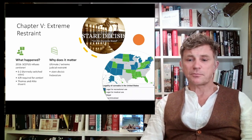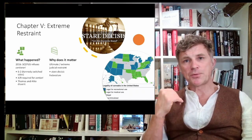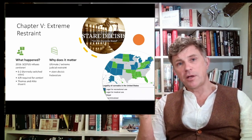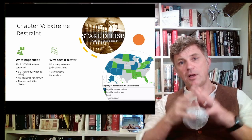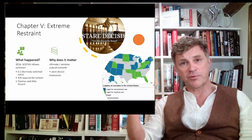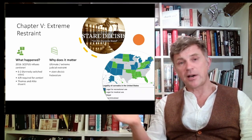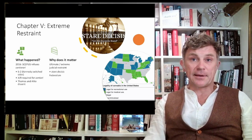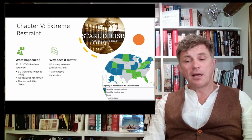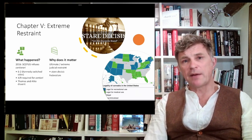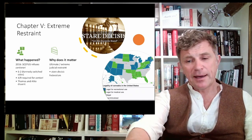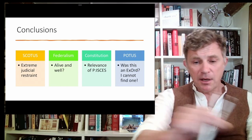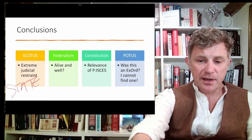That's how federalism is supposed to work — we're not going to impose one-size-fits-all because it's not in the Constitution. There is no justification in the Constitution for one-size-fits-all when it comes to drugs. And if you take your privacy and Griswold versus Connecticut in 1965, then arguably there's a case for individuals being allowed to do whatever they like. So in this chapter we have extreme restraint — the Supreme Court not getting involved and letting the states get on with it, coming down on the side of state rights.